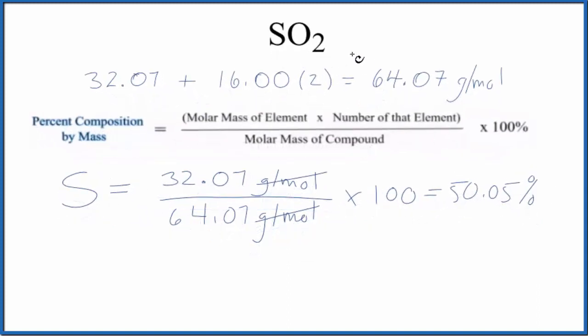That means if we had a sample, a mass of sulfur dioxide here, 50.05 percent would be from the mass of the sulfur.